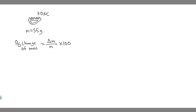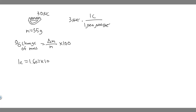Starting with 3 microcoulombs, the first thing we want to do is convert microcoulombs into coulombs. There are 1 million microcoulombs for every 1 coulomb, so we just divide by 1 million. Now we have it in coulombs. Next, we convert coulombs into electrons: for every 1 electron, there is 1.602 times 10 to the minus 19 coulombs. Multiplying through gives us the value in electrons.